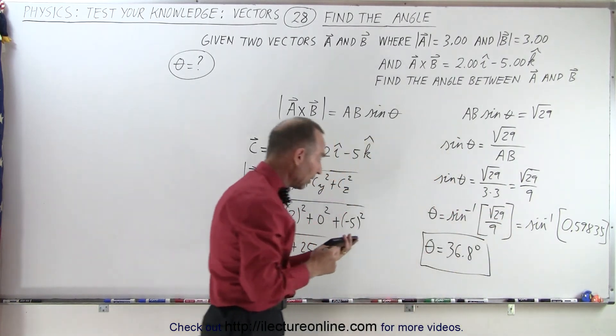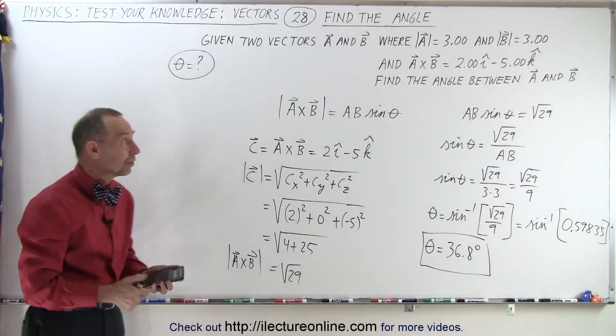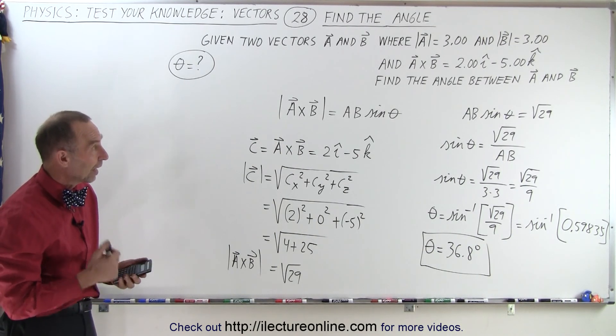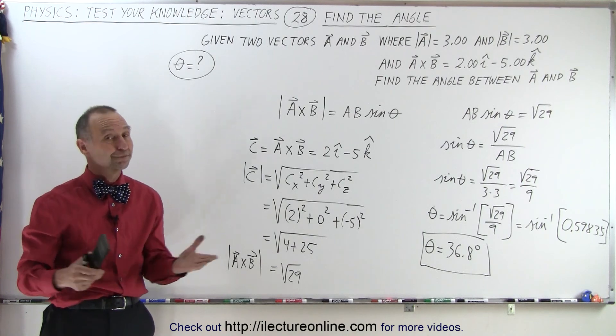And there you go — that's how we find the angle given the magnitudes of the two vectors and knowing the cross product. That's how it's done.